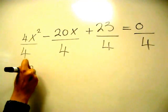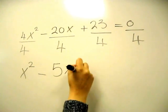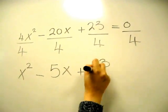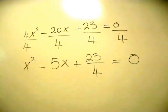Then that would give me an x squared coefficient of 1, negative 5x because 20 divided by 4 is 5, plus 23 over 4 equals 0. Because 0 divided by anything is 0.